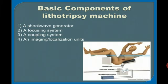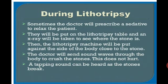The third important component is the coupling system, which monitors the quality of the shockwaves. The fourth important unit is the imaging unit, which uses an ultrasound machine to monitor the fragmentation of stones in real time. These are the important components of a lithotripsy machine.